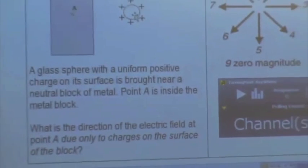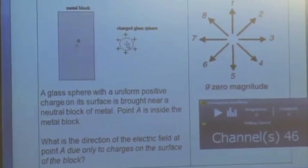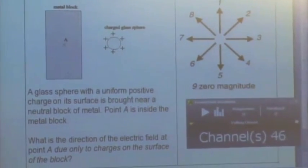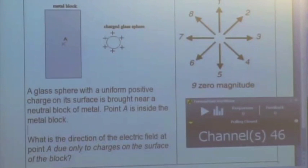We have a glass sphere right here. It has a uniform positive charge on the surface, and it's brought near a neutral block of metal. Okay, so here's the metal. And point A is inside the metal block.